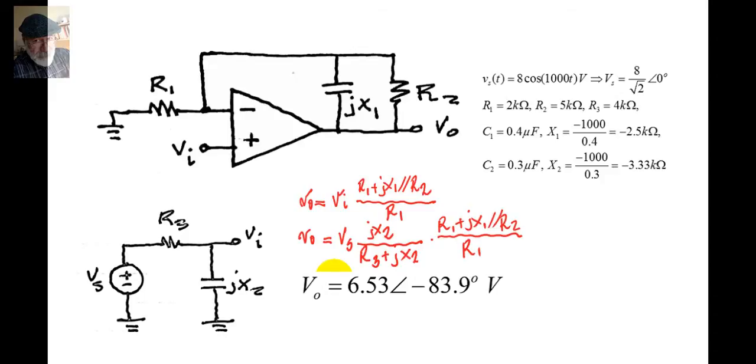And we want to write that as a function of time. For that, we take the RMS value from the phasor, multiply that times root 2 to get the peak value, and we can finally write that the output voltage is a function of time with that peak value, the same Omega 1000, and the new phase shift that we just found.